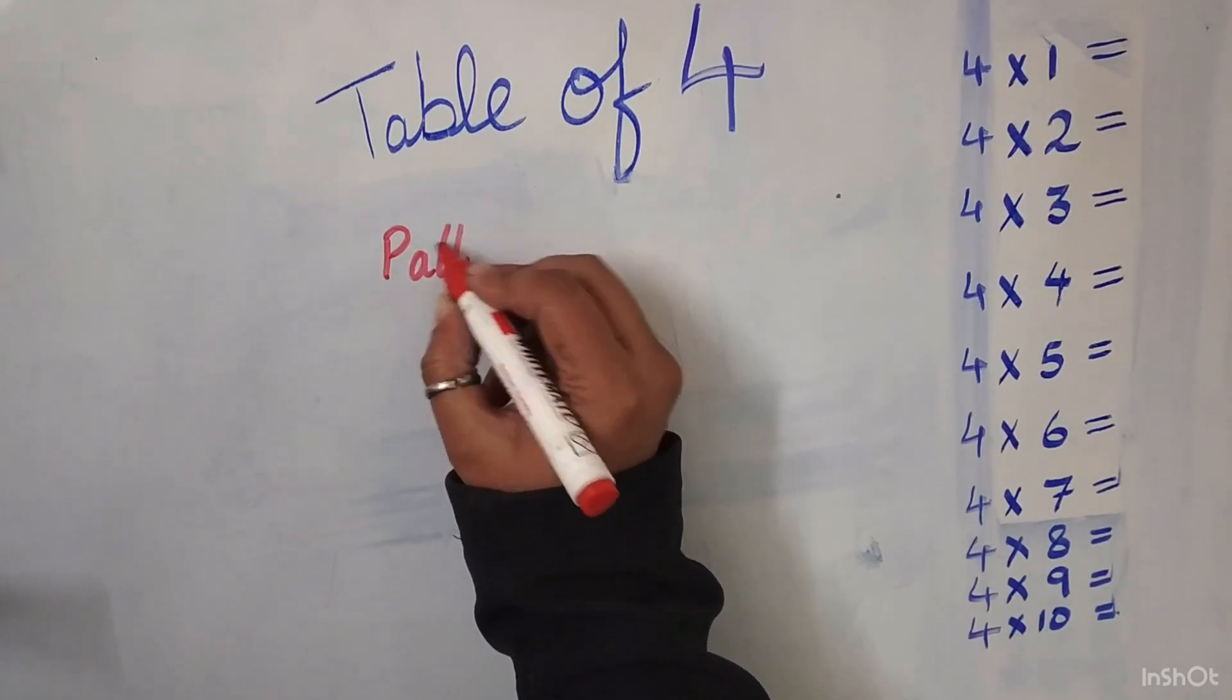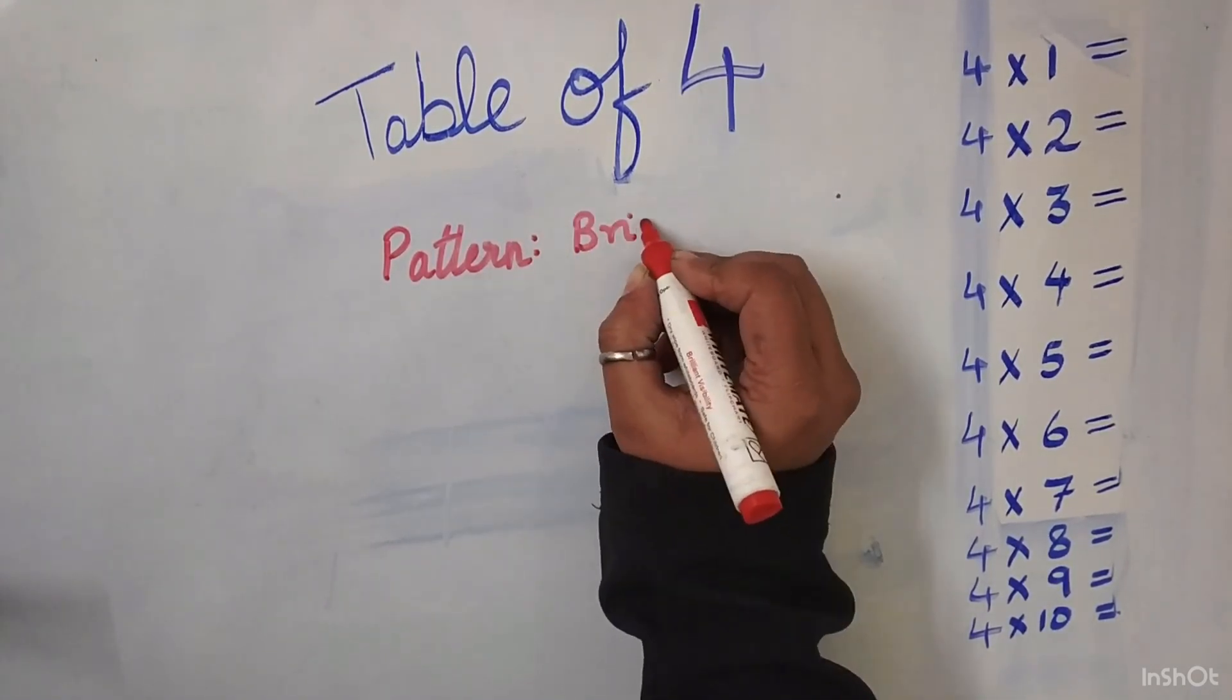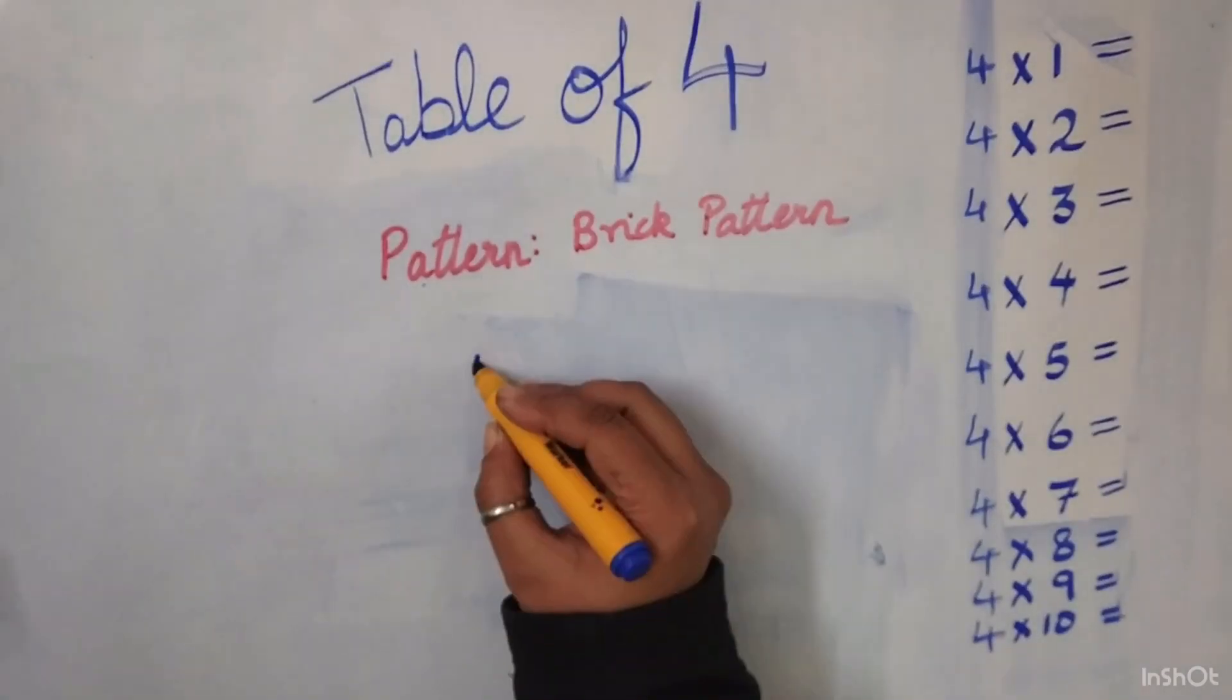Now we come to the table of 4. Here the pattern is the brick pattern. And the number series that we follow is 0, 2, 4, 6 and 8.